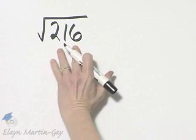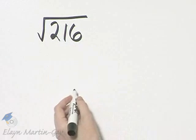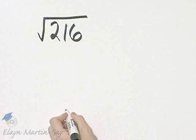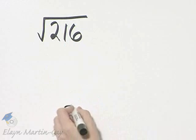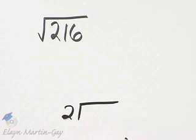If you have trouble finding that for something as large as 216, you might want to try the process of dividing primes into that number.